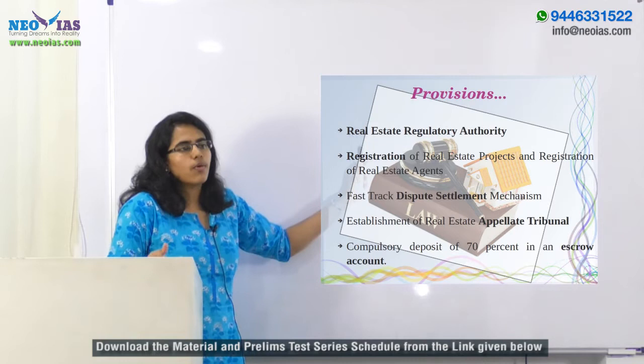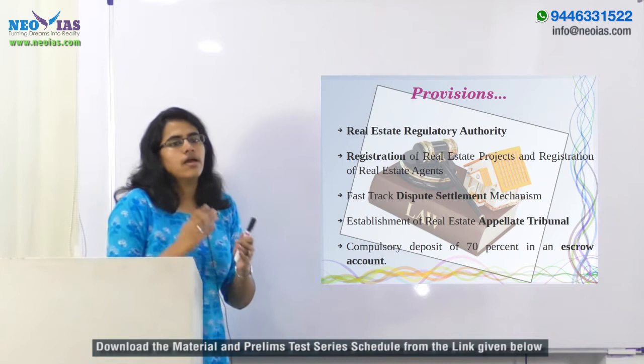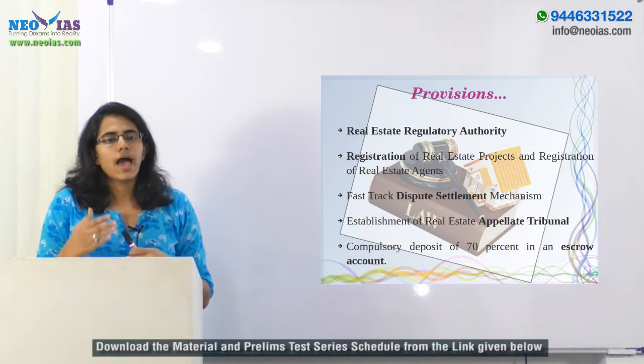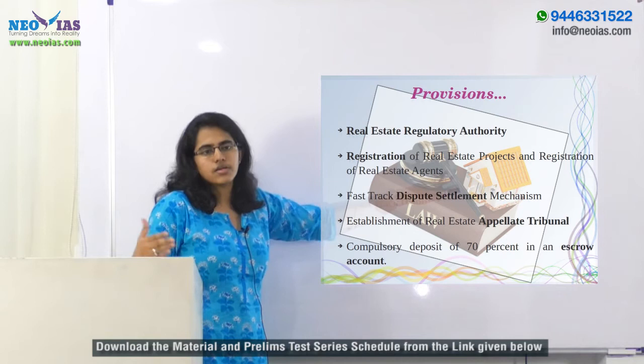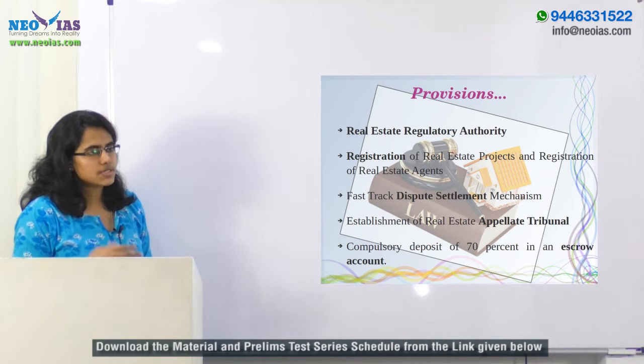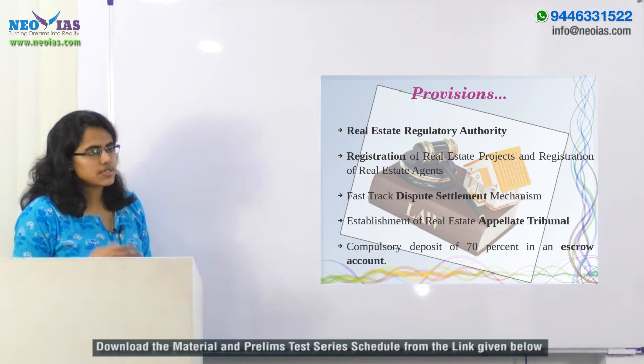Looking into the provisions of the act in detail, the first thing is that it provides for the establishment of a Real Estate Regulatory Authority — a single regulator. This authority will be established at the central as well as at the state level. It also provides that real estate projects where the planning area exceeds 500 square meters, or where the number of apartments exceeds 8, must mandatorily register with the Real Estate Regulatory Authority.